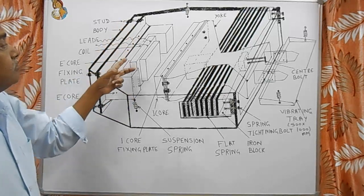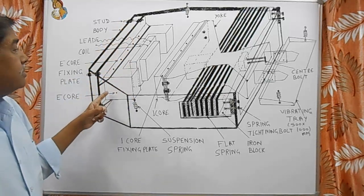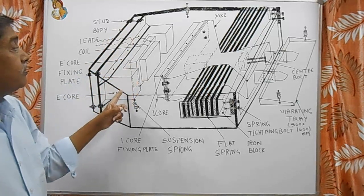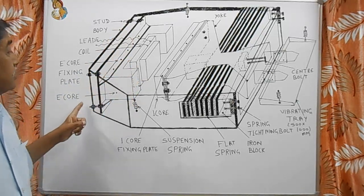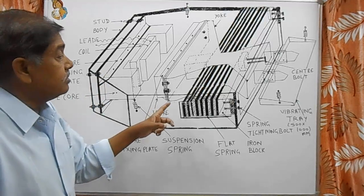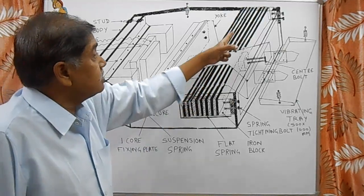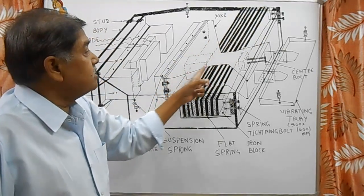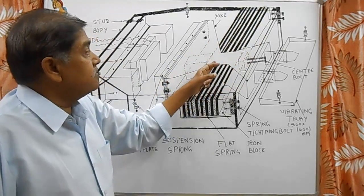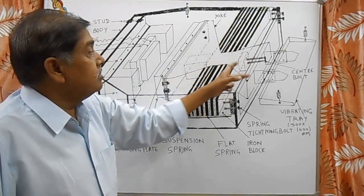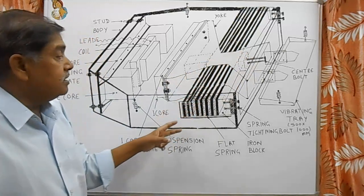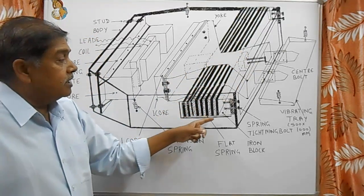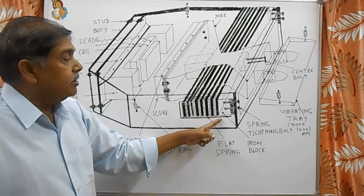Here are spin plates. These are eight spin plates. This part is known as the yoke. This yoke is connected with the help of a center bolt to the spin plates, and the spin plates are fitted at the side of the vibratory feeder body.